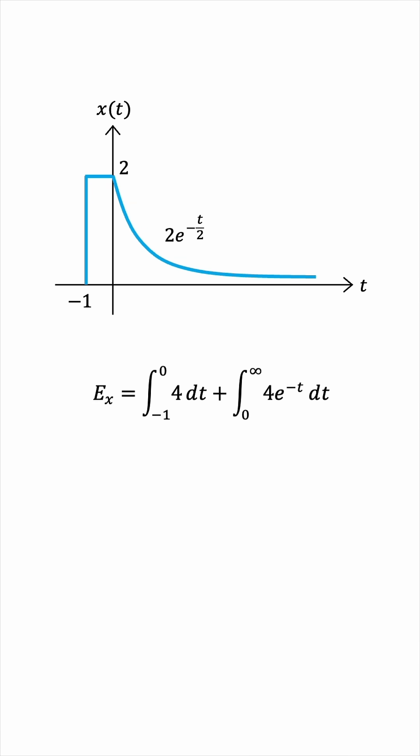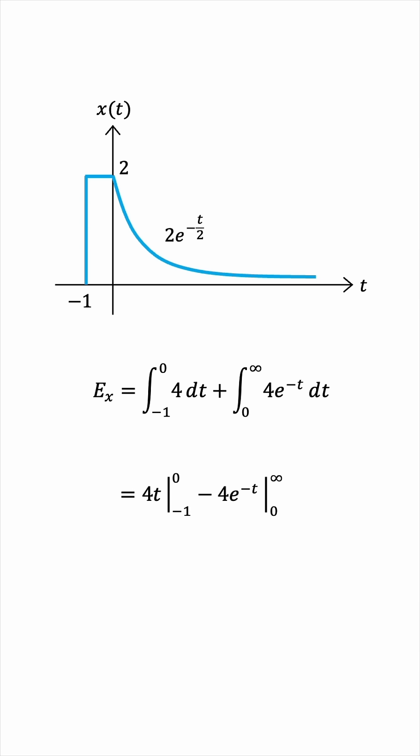And now we integrate. We get 4t from negative 1 to 0, and the second integral — well, technically it's improper, so we should really be taking the limit. But this is just implied here. We can just take the antiderivative and plug in infinity as a bound when the limit is implied as part of the process. This is engineering, not math, so formalities don't really matter here.